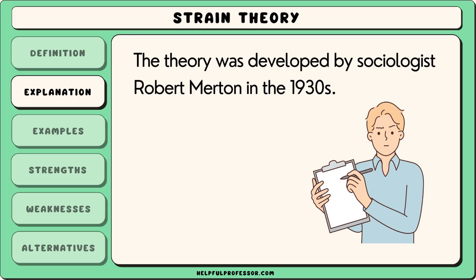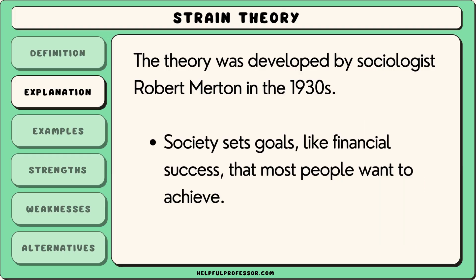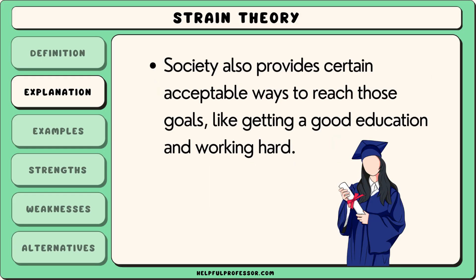The theory was developed by sociologist Robert Merton in the 1930s. Merton believed that society sets goals, like financial success, that most people want to achieve. Society also provides certain acceptable ways to reach those goals, like getting a good education and working hard.